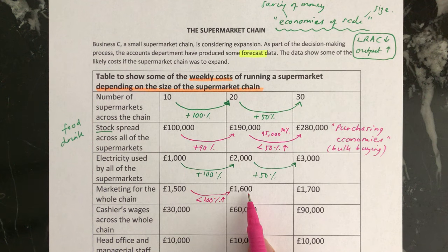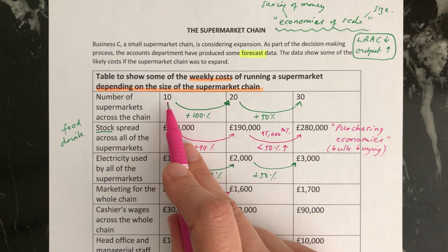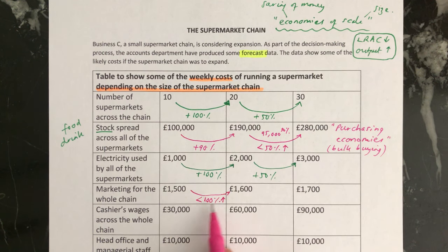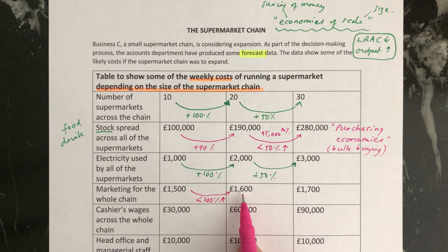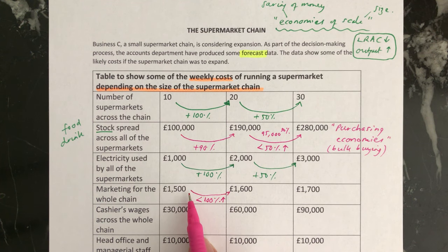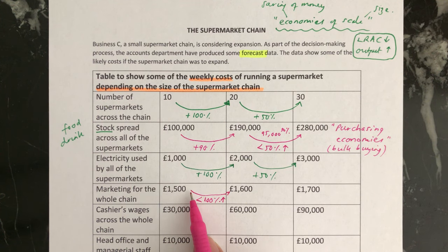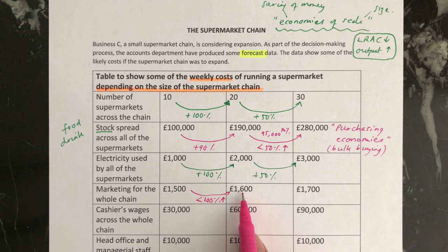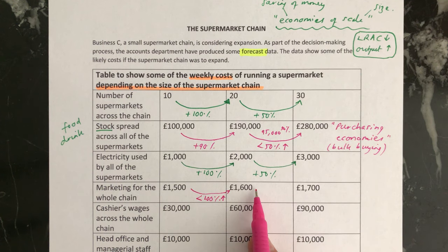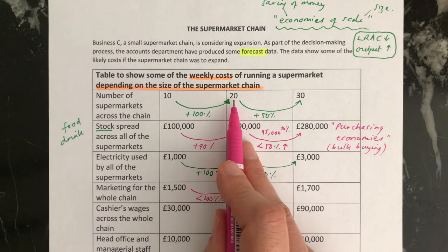An example of this would be if the supermarket has taken out an advertisement on buses in the area. Whether they have 10 or 20 supermarkets in total, they won't have to pay the advertising company double the amount of money for the bus advertisements when they go up to 20 supermarkets. They'll have agreed an amount — maybe £1,500 — and even if they open more shops they don't have to pay all of this money again. The advertisements still exist on the buses, so they keep the number of advertisements the same and maybe just charge them a tiny bit more — here £100 more — to account for the fact that the chain is now advertising 20 shops rather than 10.